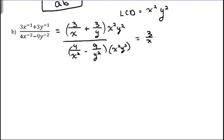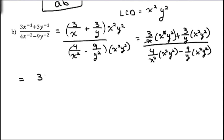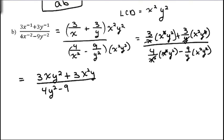We have 3 over x times x squared y squared, plus 3 over y times x squared y squared, over 4 over x squared times x squared y squared, minus 9 over y squared times x squared y squared. When I multiply 3 over x by x squared y squared, one x cancels, so we'll have 3xy squared, plus when the y cancels with one of these y's, we have 3x squared y. And 4 over x squared — the x squareds cancel, giving us 4y squared, minus 9 over y squared — the y squareds cancel, and we're left with 9x squared.